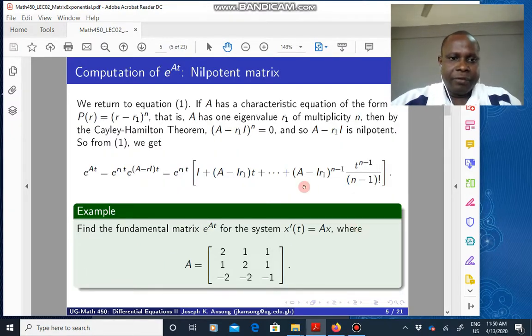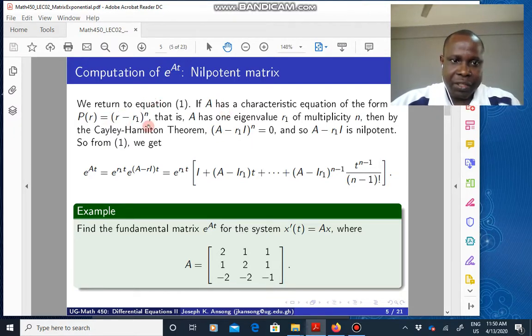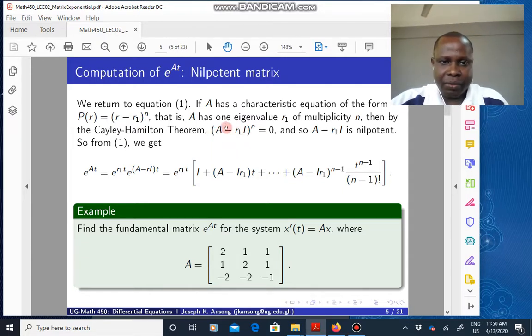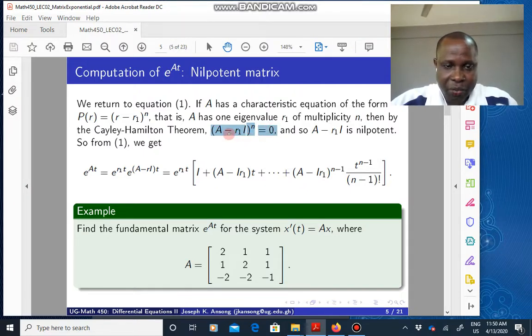Now, if you go back to equation one, if I have a matrix A and I compute the characteristic equation or polynomial of it, and it's of this form, where R1 here is an eigenvalue with a multiplicity of n, then if I apply the Cayley-Hamilton theorem, what it means is that I can replace R with A, R1 moduli by I, and this quantity will go to zero. This then vanishes. If this goes to zero, what it means is that what is inside a bracket here is nilpotent.